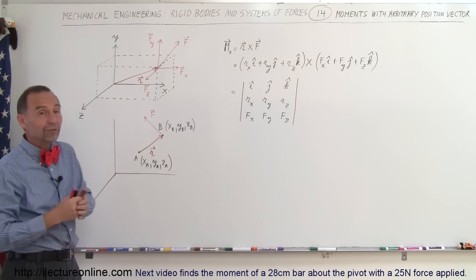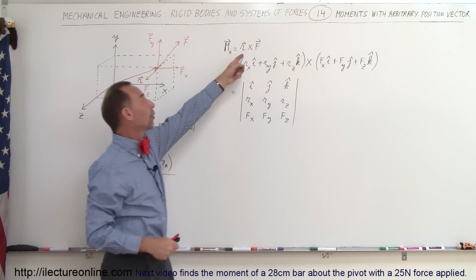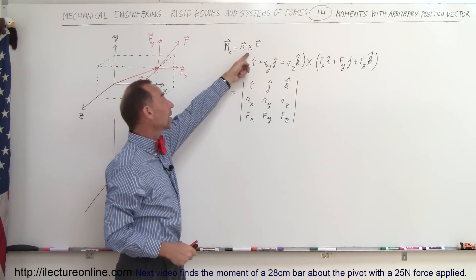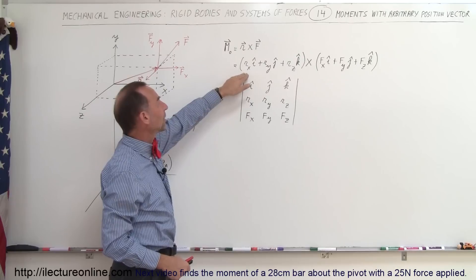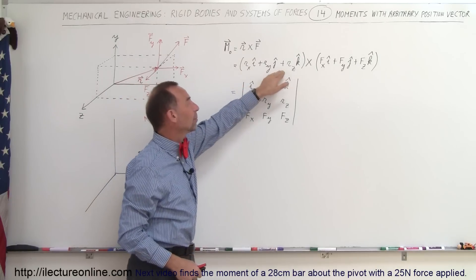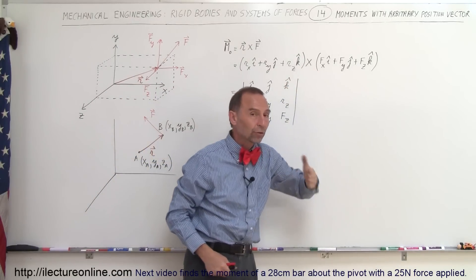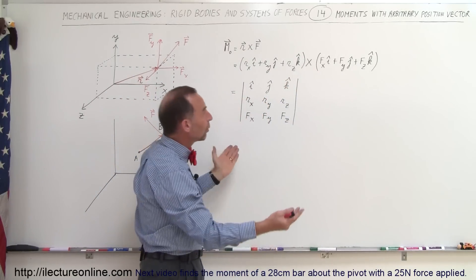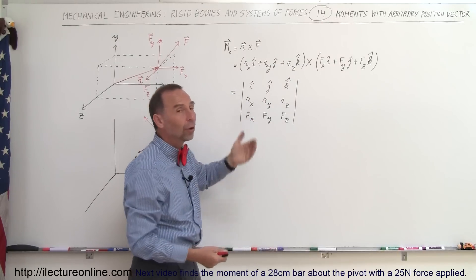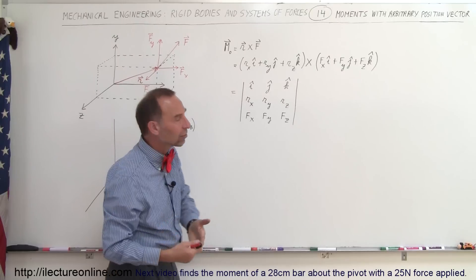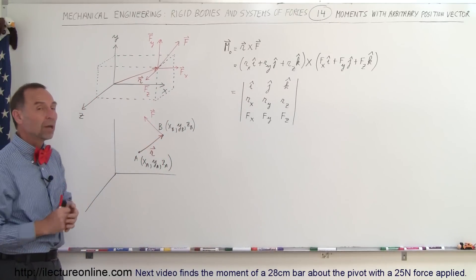When we want to find the moment, we perform the vector product. The vector product will look something like this, where we have the X, Y, and Z components of the position vector and the X, Y, and Z components of the force. We then execute this vector product methodology.